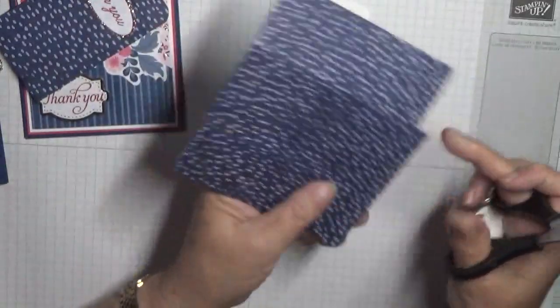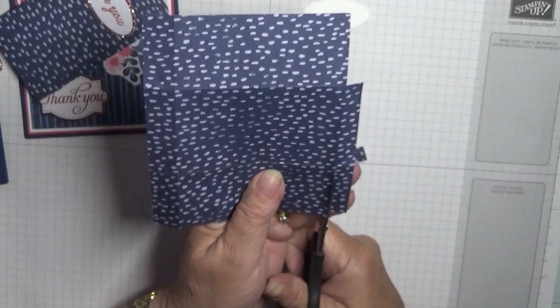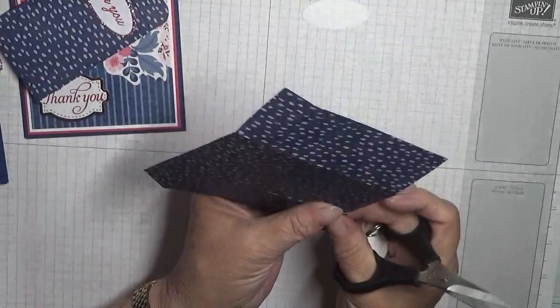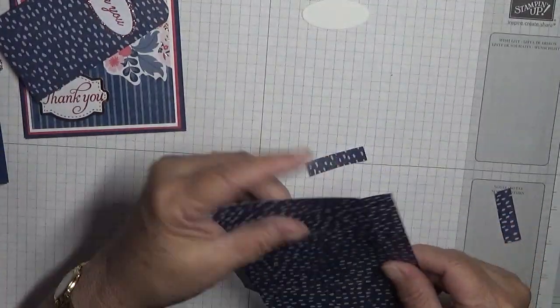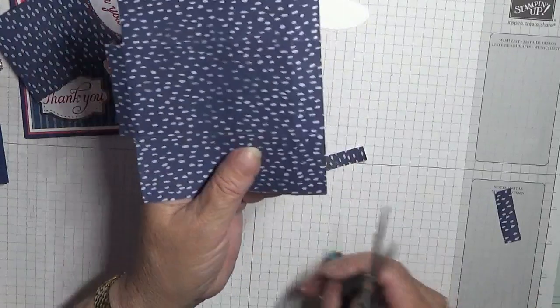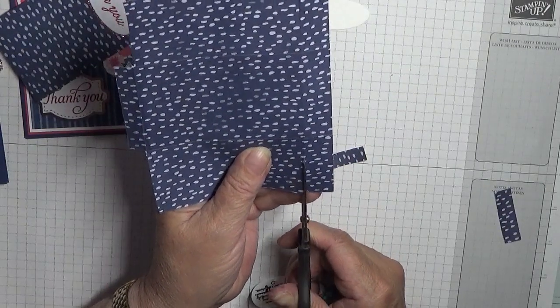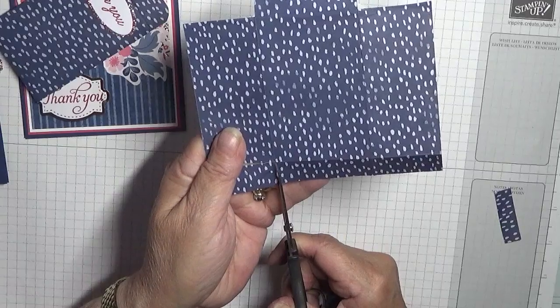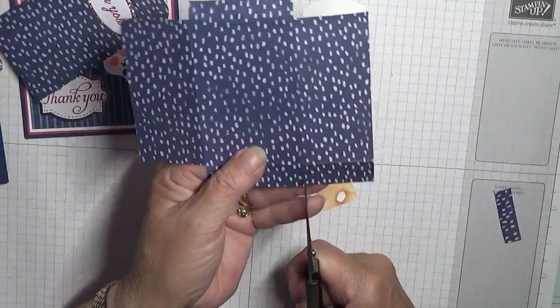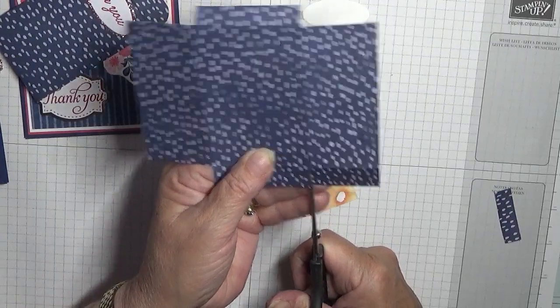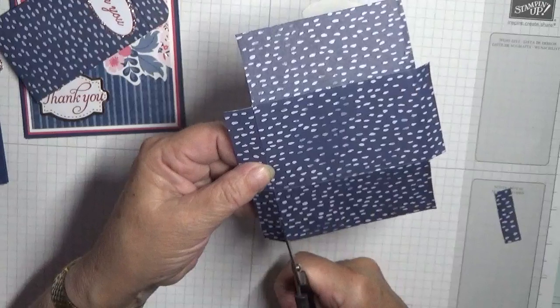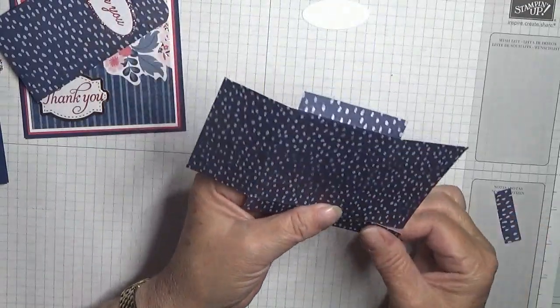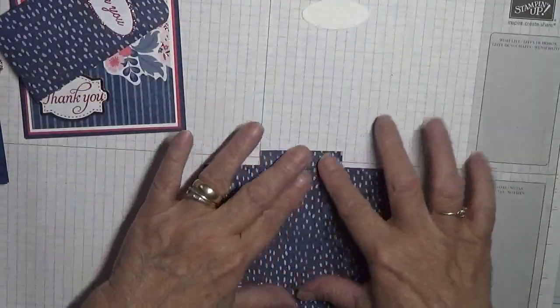With my paper snips I cut up that fold line and I cut this off, same as this side. Cut that off and cut up the fold line. Cut up the fold line. Then you end up with a piece like this.